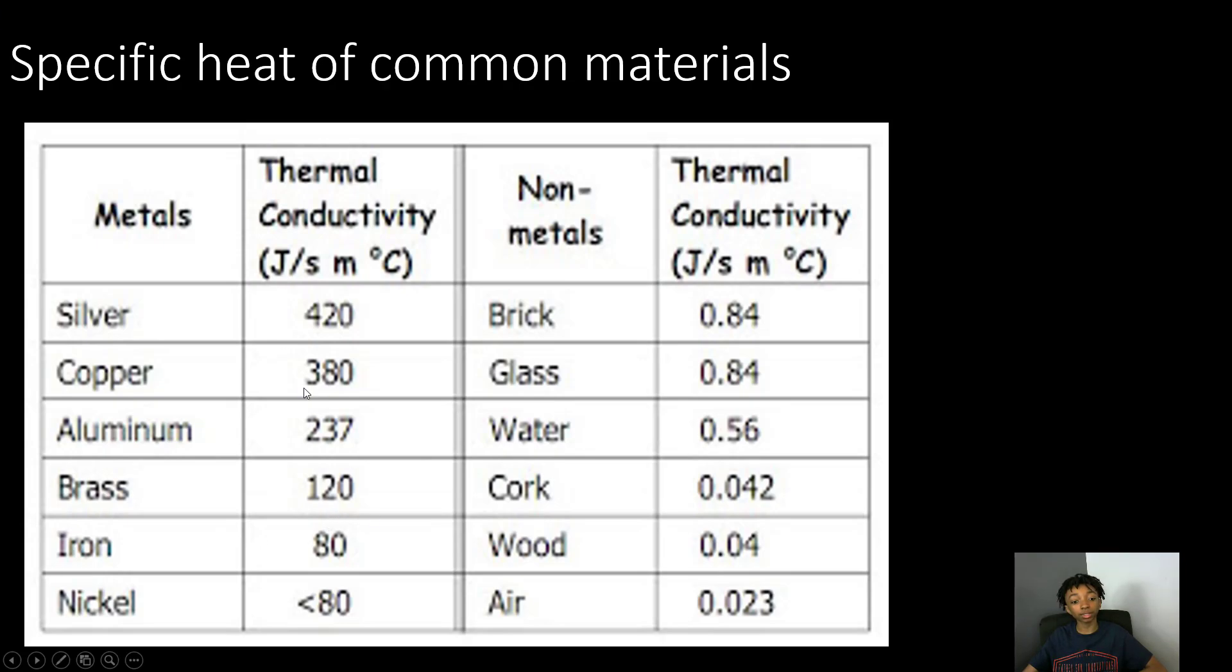Let's start off with our metals, starting with the lowest specific heat in our metal category, which is nickel. Nickel has a less than sign, so this specific heat is going to be less than 80. Now let's go all the way up to our highest specific heat, which is silver, and the specific heat for silver is going to be 420.